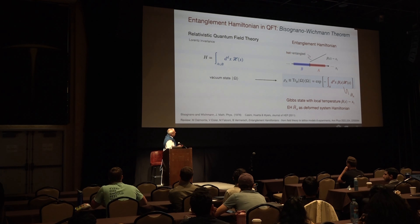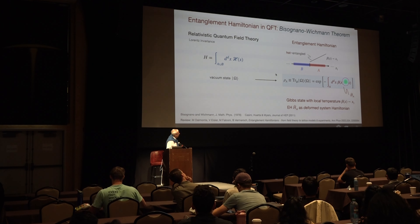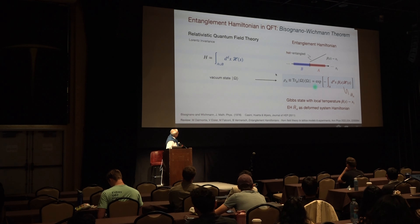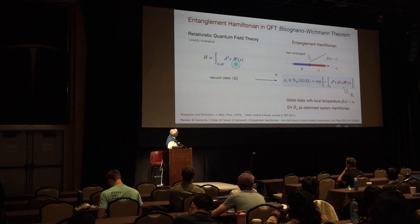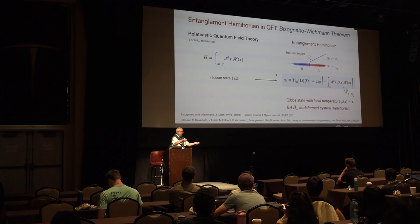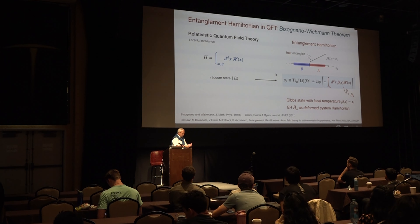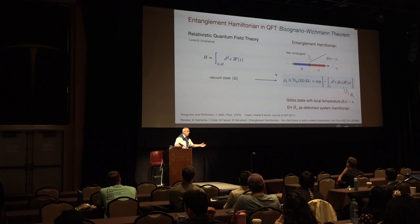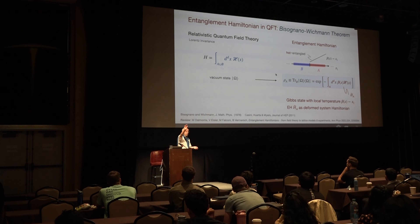In other words, we can identify this object as the entanglement Hamiltonian, because we get a prescription that simply says: if I take my original Hamiltonian and deform my Hamiltonian density with this ramp — the Bisognano-Wichmann ramp — this is simply telling us the entanglement Hamiltonian is the original Hamiltonian multiplied by a ramp.